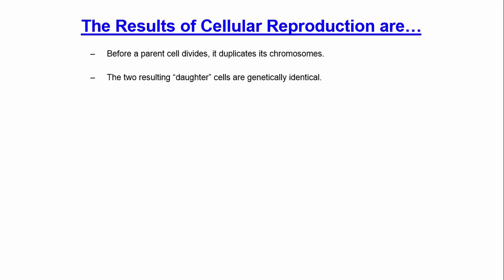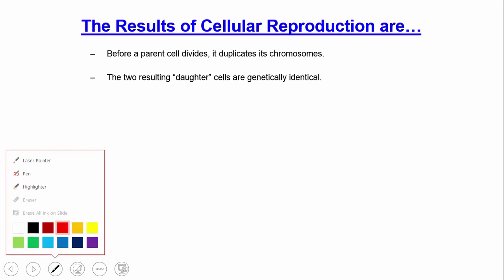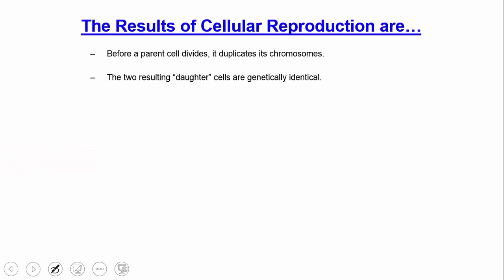We have to discuss the results of cellular reproduction. There are two things to think about. Before a parent cell divides, it duplicates its chromosomes. The resulting daughter cells have identical chromosomes — they're genetically identical. Sort of cloning, if you will. Those are the results.